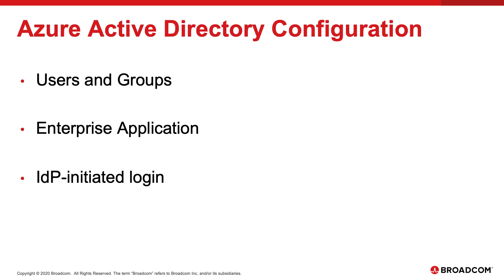For the Azure AD configuration, we'll either create or configure the users and groups that will be assigned to the enterprise application. We'll also create or configure the enterprise application that maps to DX SaaS. We'll keep in mind that the authentication is IDP initiated, and we will record the information we'll need in the DX SaaS SAML configuration wizard.